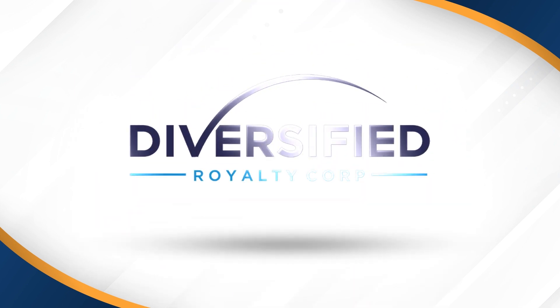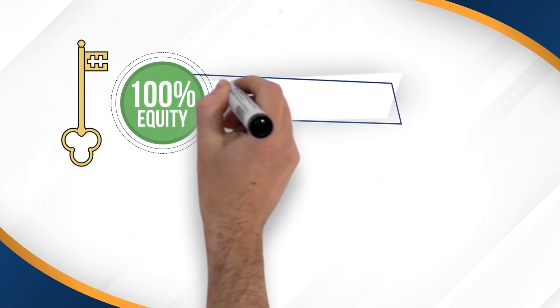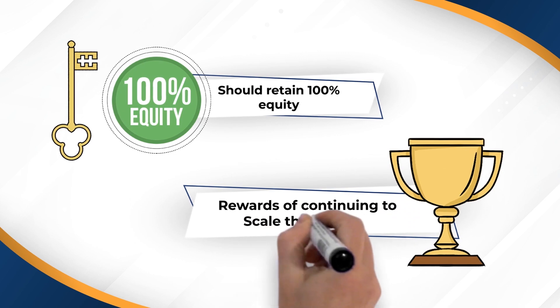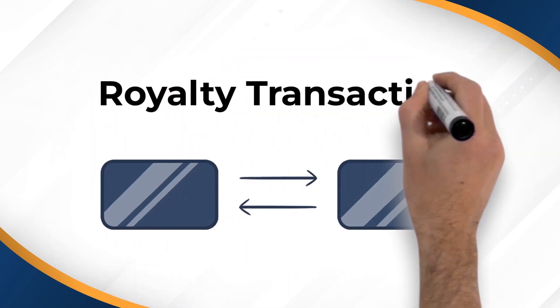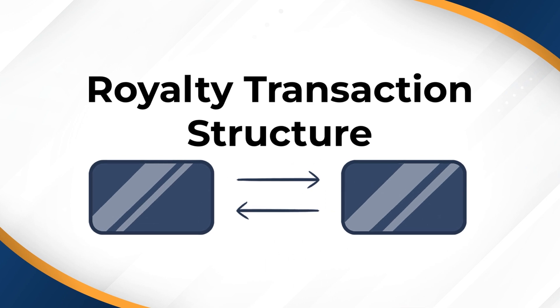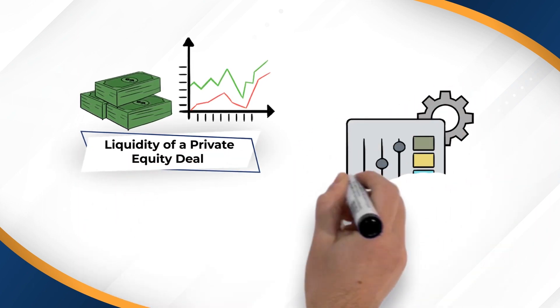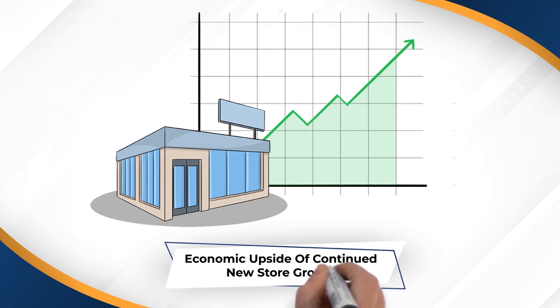Diversified Royalty Corp believes owners of high-quality franchisors should retain 100% equity ownership and reap the economic rewards of continuing to scale the business. Diversified Royalty Corp's unique trademark and royalty transaction structure provides owners with the liquidity of a private equity deal, while retaining 100% control and the economic upside of continued new store growth.